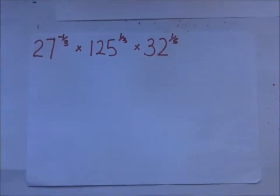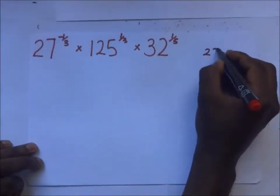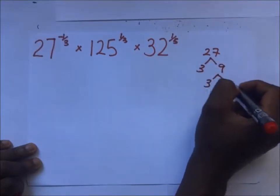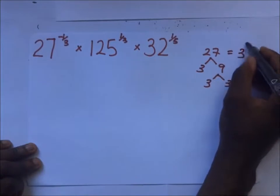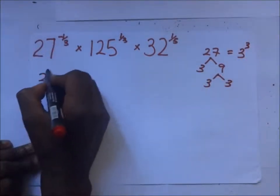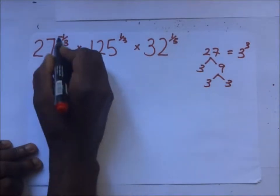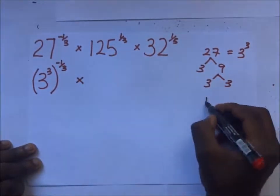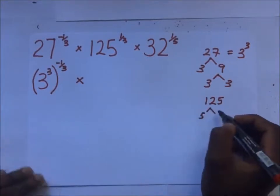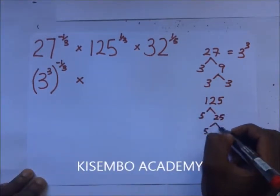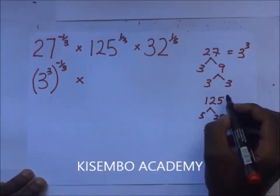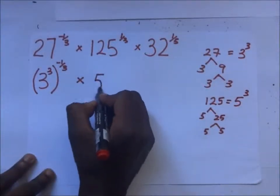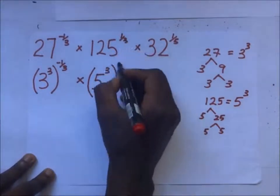From prime factorization: 27 divided by 3 is 9, divided by 3 is 3, so 27 is the same as 3 to the power 3. So this 27 is replaced by 3 to the power 3. Multiplied by 125 to the power 3: if you factorize 125, divided by 5 gives 25, divided by 5 gives 5, so 125 is the same as 5 to the power 3. So 125 is replaced by 5 to the power 3, all to the power 3.